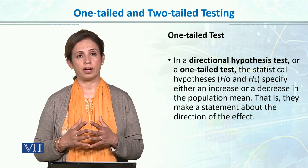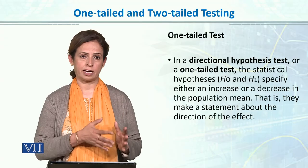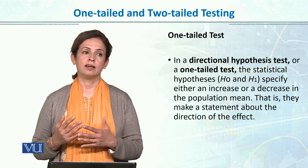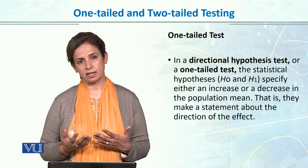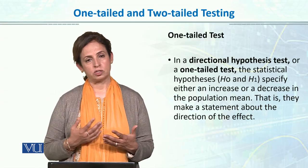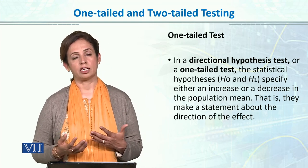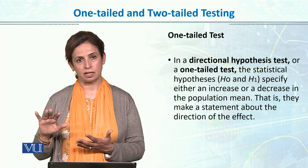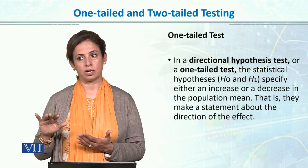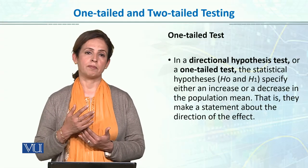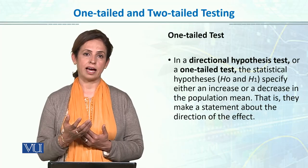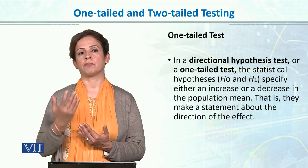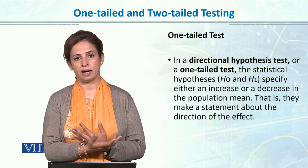If we say there could be an effect, that effect can be negative or positive. For example, I have trained students, and after that training, I expect their performance will increase. So my most likely hypothesis will be one-directional, because I am expecting that if someone has learned something, their performance will be better compared to those who have not studied.